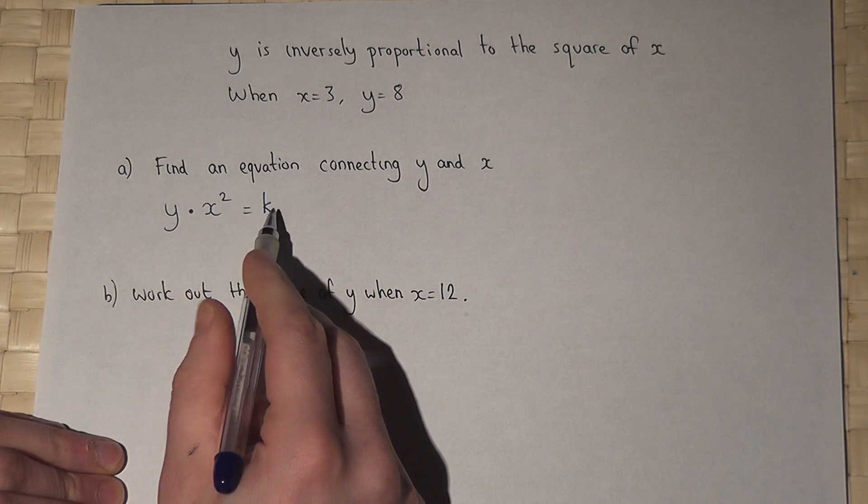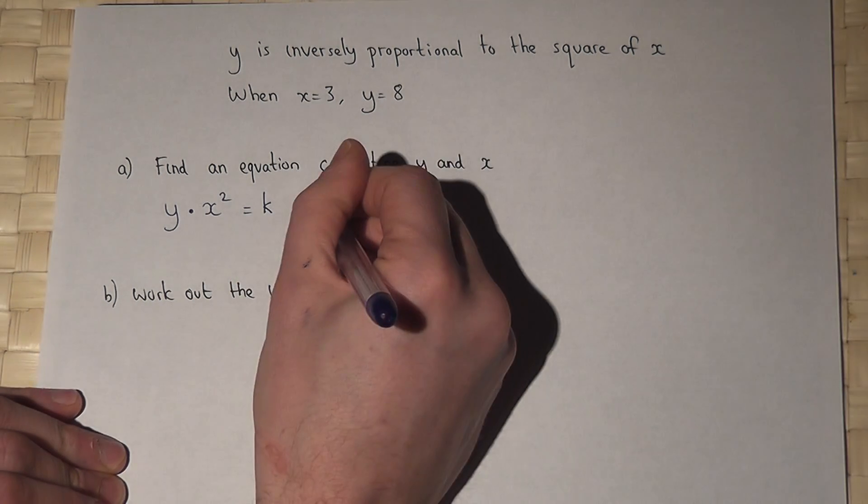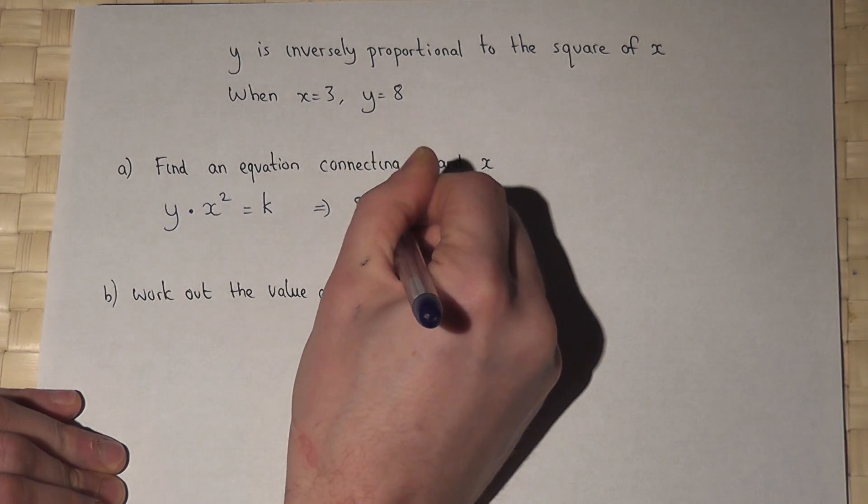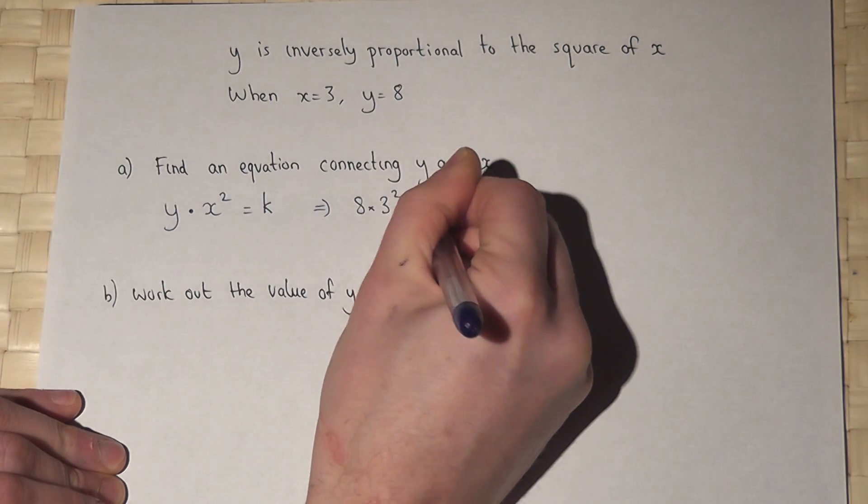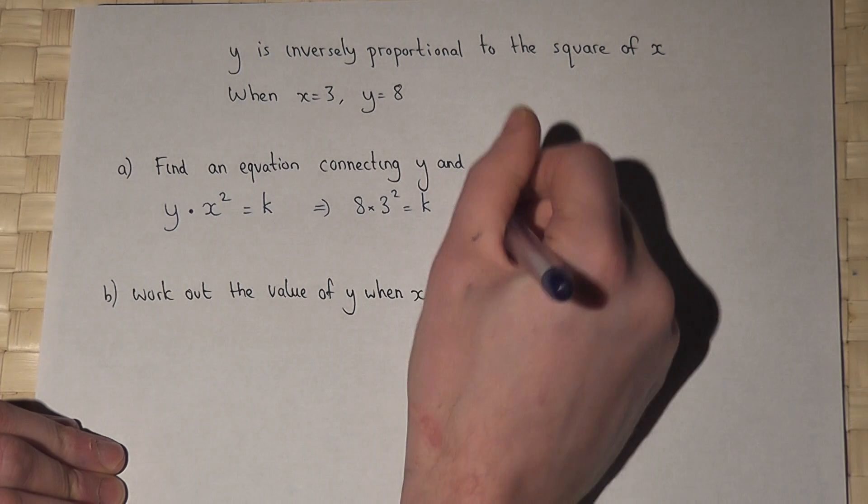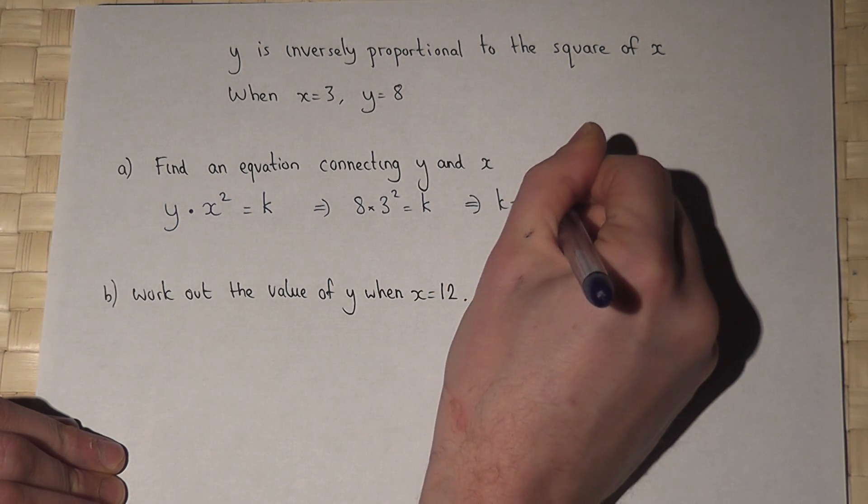We can find k because when x is 3, y is 8. So therefore 8 times 3 squared equals k. Well, 3 squared is 9, 9 times 8 is 72. So this tells me that k equals 72.